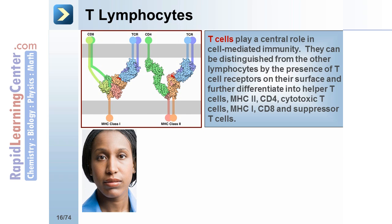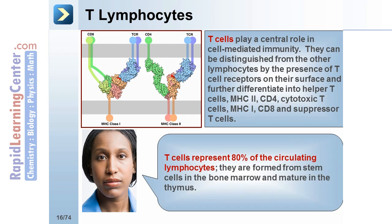T cells play a central role in cell-mediated immunity. They can be distinguished from the other lymphocytes by the presence of T cell receptors on their surface, and they further differentiate into helper T cells that express MHC2 and CD4, cytotoxic cells that express MHC1 and CD8, and suppressor T cells. T cells represent 80% of the circulating lymphocytes. They are formed from stem cells in the bone marrow and mature in the thymus.